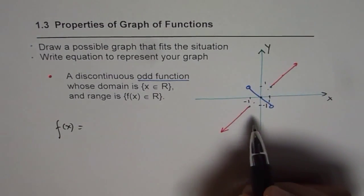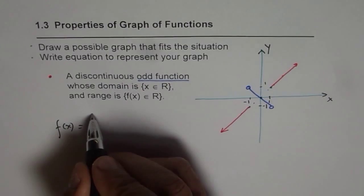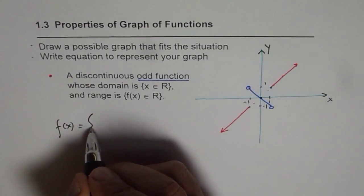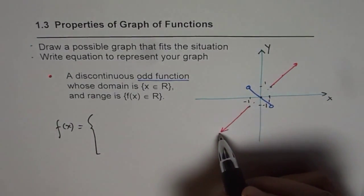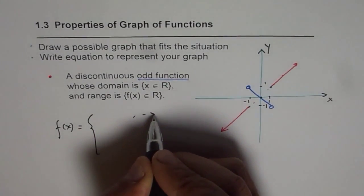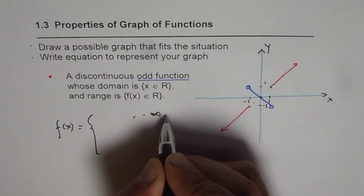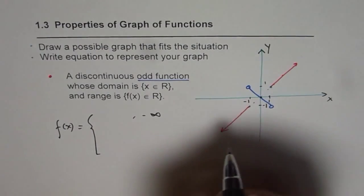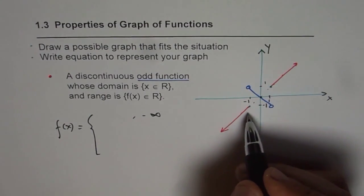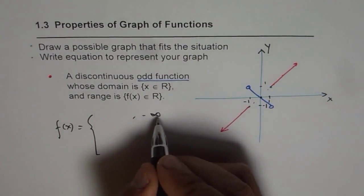Now, we can write this function as a piecewise function. So maybe three pieces. So first piece is from minus infinity to, let us say minus one. So we can say when x is less than,